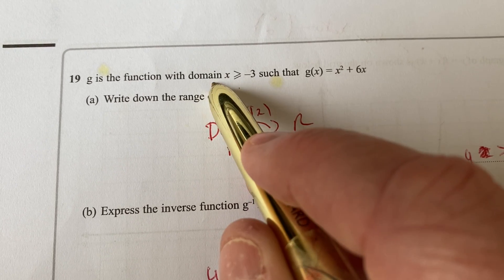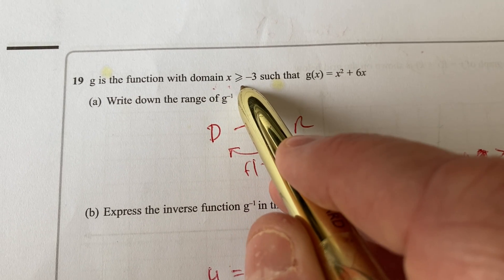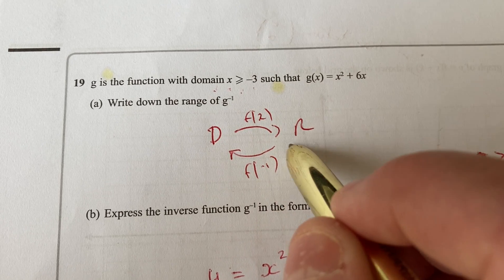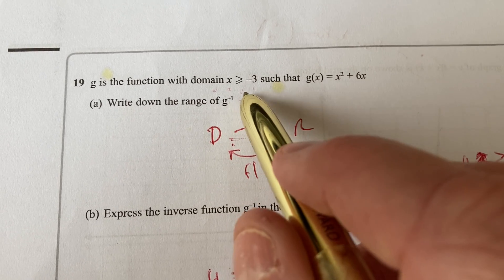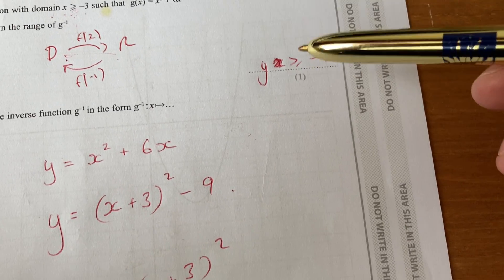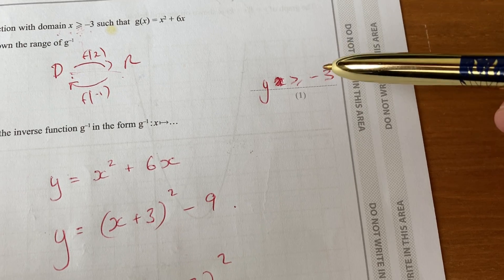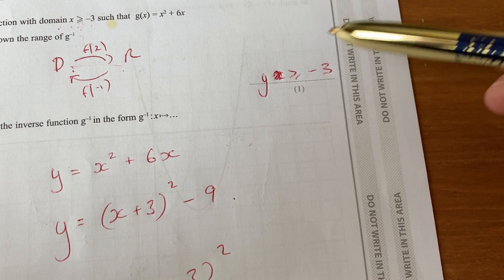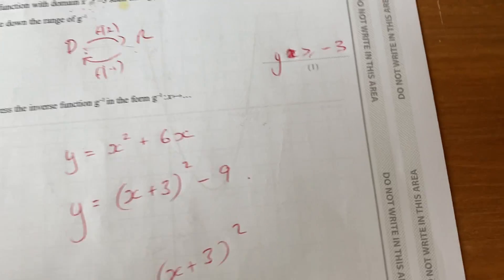So the domain is going to be x, the domain of x was bigger and equal to minus 3, so when we come back again, the range for the inverse is bigger and equal to minus 3. But when we come back, we're using our output, so it's y that needs to be bigger and equal to minus 3.